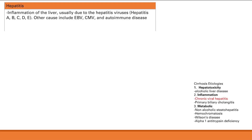Hepatitis, from the name you can tell, means inflammation of the liver. Usually this inflammation arises from an infection from the hepatitis family of viruses — hepatitis A, B, C, D, or E. But you can also have other causes of hepatitis, including a viral infection from the Epstein-Barr virus (EBV) or cytomegalovirus (CMV), or you can have hepatitis from an autoimmune problem.